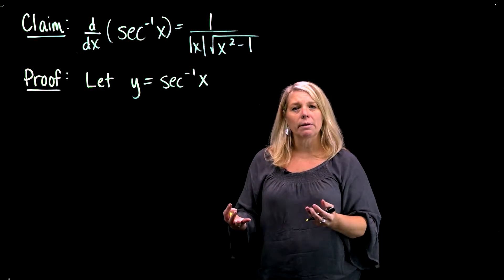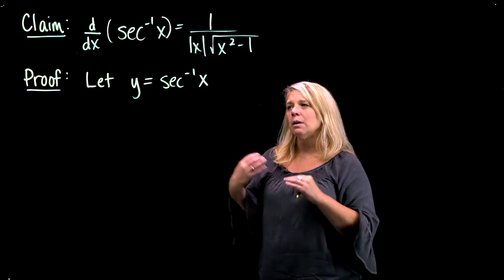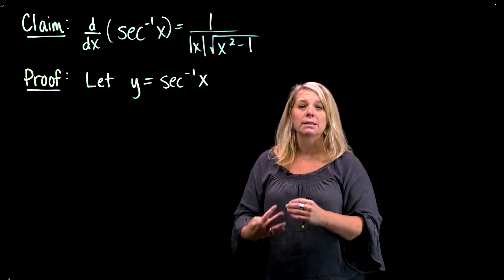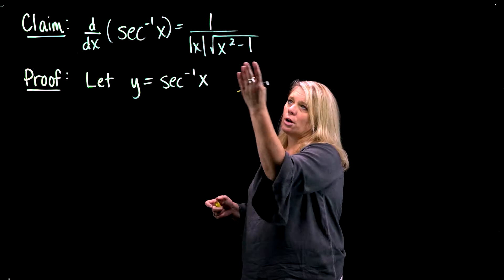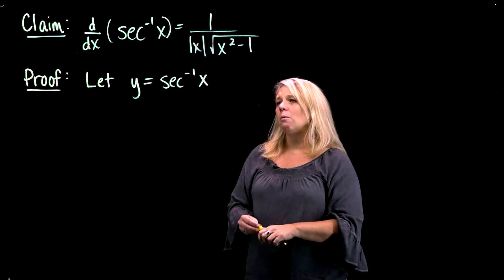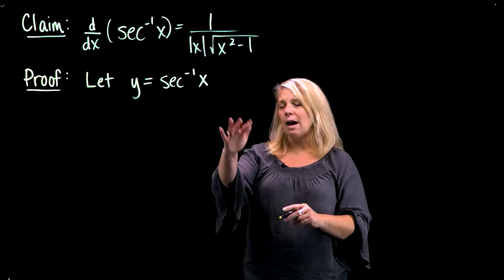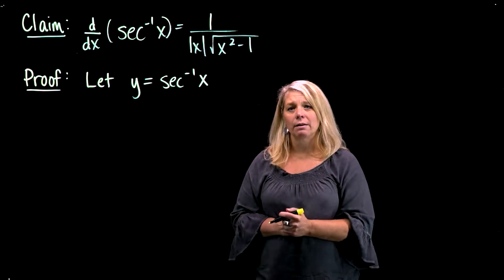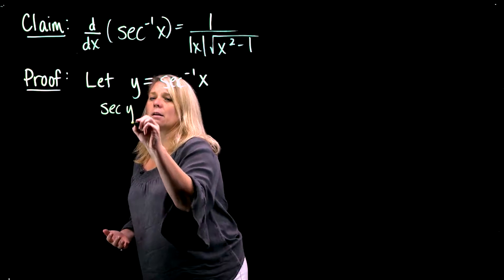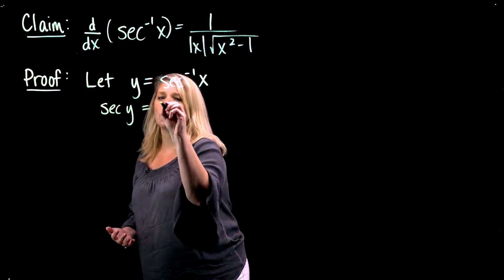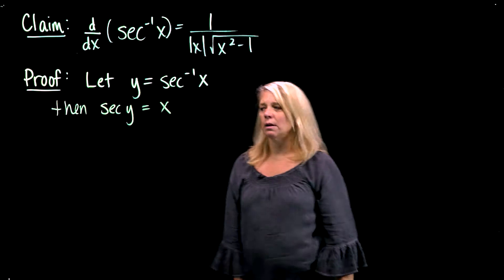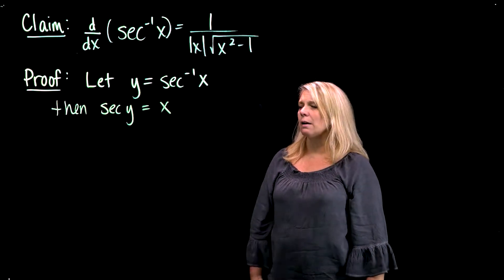Just like we did when we looked at some other ones, what I'm going to do is use the definition of an inverse function and implicit differentiation to show that this is true. So if we know that y is the inverse secant of x, then just by definition of what an inverse function is, that would mean that secant of y is x. So then: secant of y equals x.